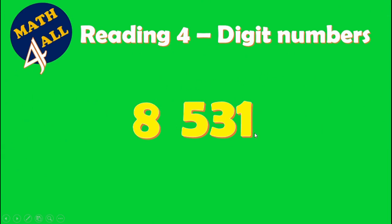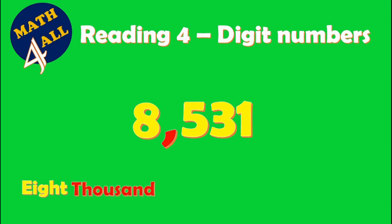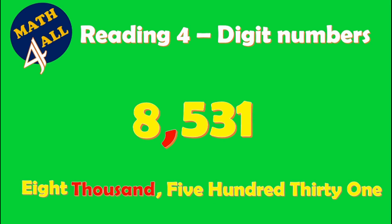Here we have four-digit numbers. The first step: count three digits from the right side — one, two, three — then put a comma. This comma you will call 'thousand.' Then start reading from the left side. Here we have eight, after eight we have the comma, so we say eight thousand, then five hundred thirty-one: eight thousand five hundred thirty-one.